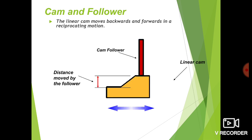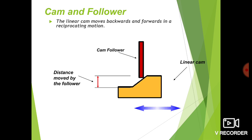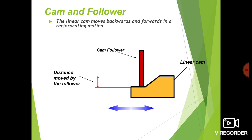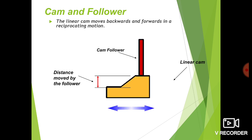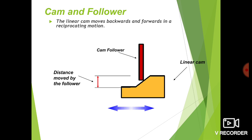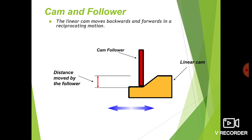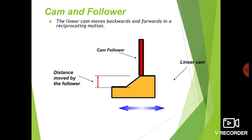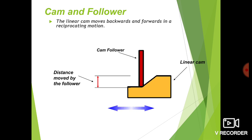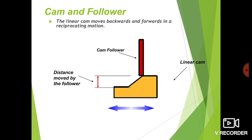The lift of the follower is the distance moved by the follower in one reciprocation. The follower moves from its bottom end to its top end, and that distance traveled when the cam completes one rotation is called the lift of the follower.